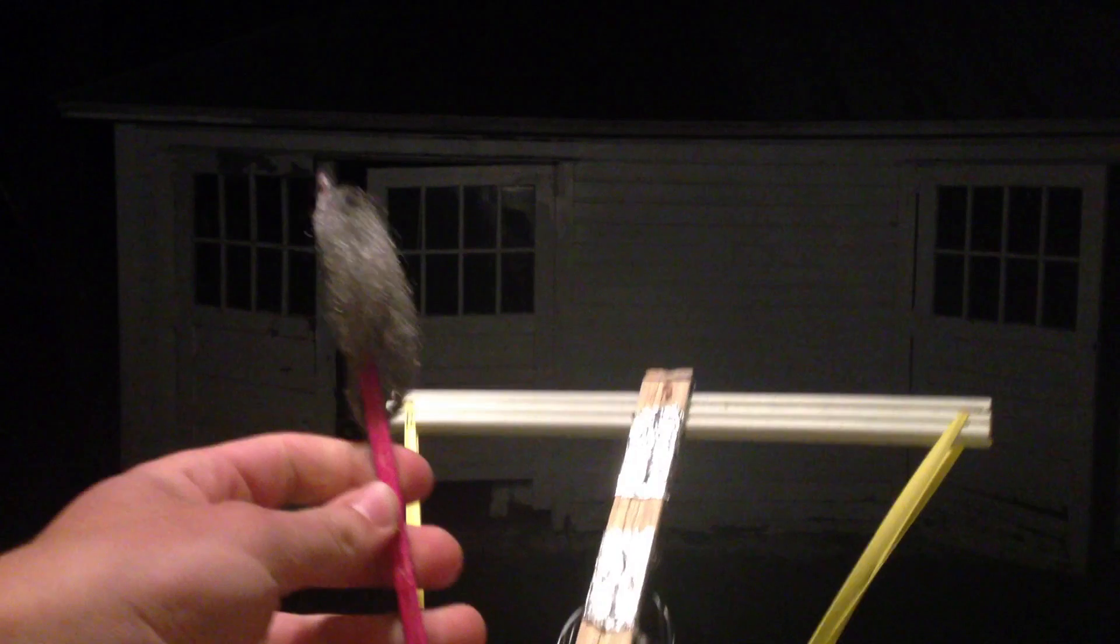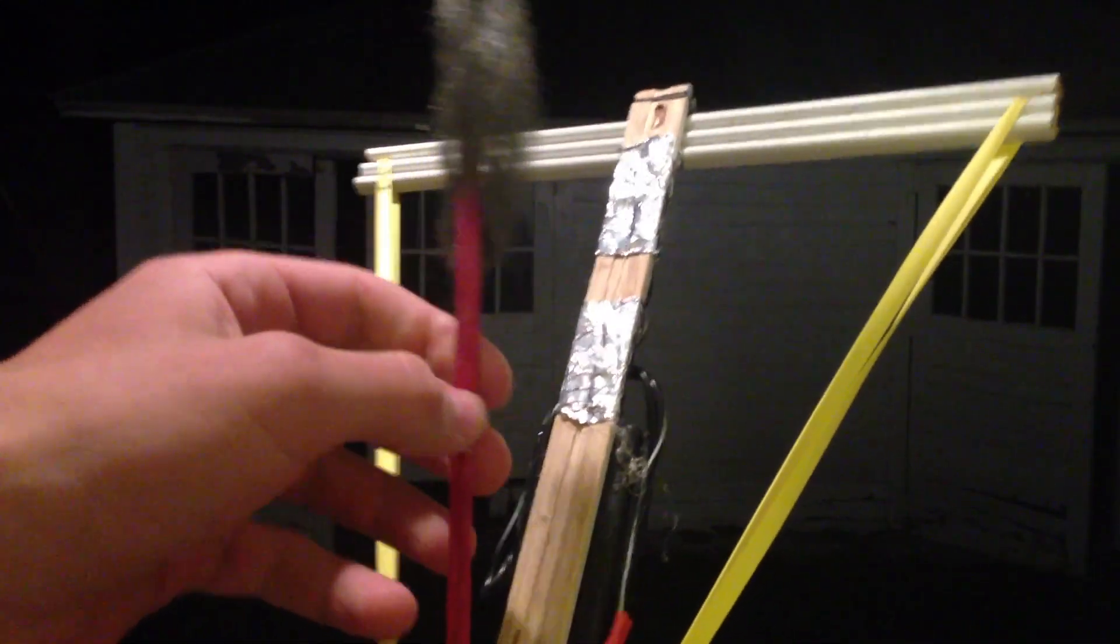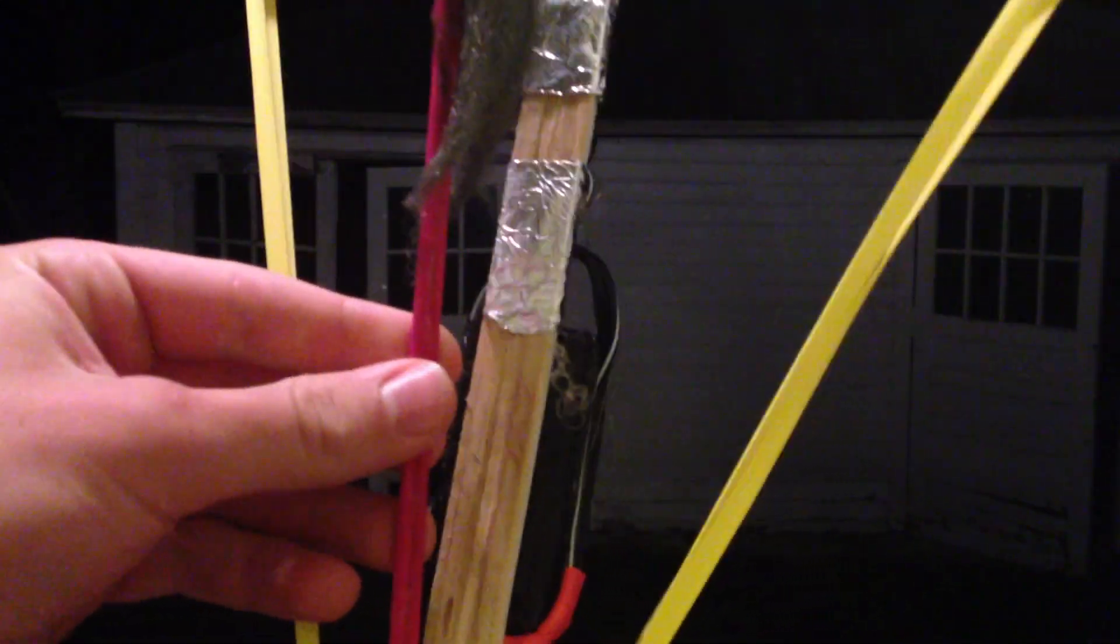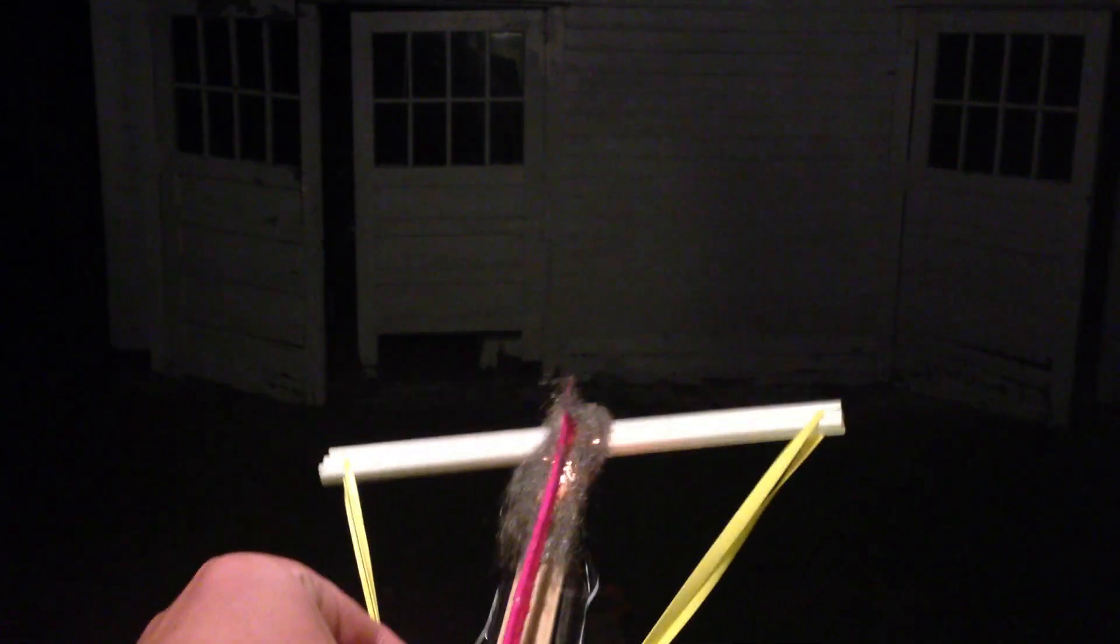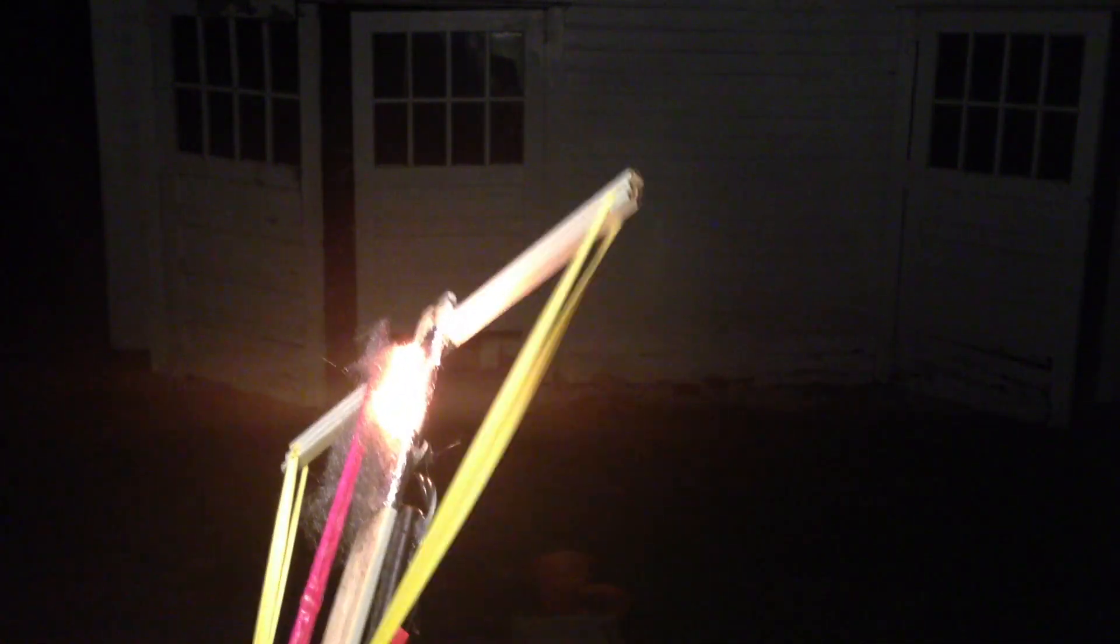To load it, just pull back on the rubber band and put the arrow into the notch. Make sure the rubber band goes between the two skewers at the end. Then flip the switch and the steel wool should light up. Wait a few seconds for it to catch. Blowing on it can also help. Then press down on the clothespins and the arrow will go flying.